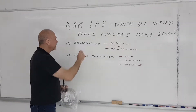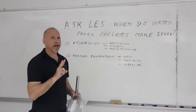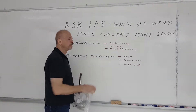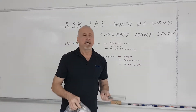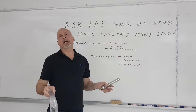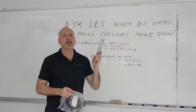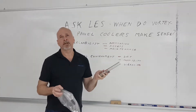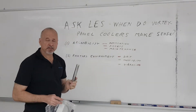Those are the two key factors. On reliability — how important is the application? If an air conditioner goes down, it just goes down. It's very unlikely that a compressed air source, as the only energy required to operate a panel cooler, is going to fail.